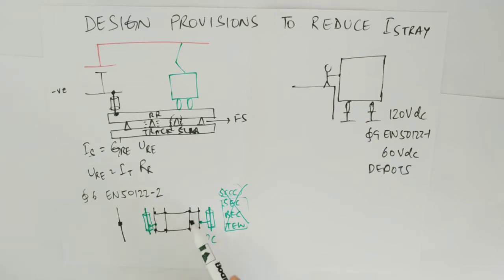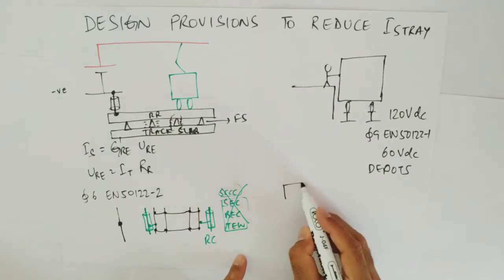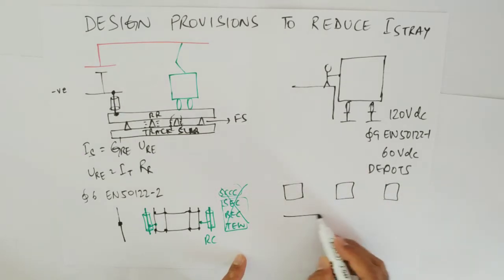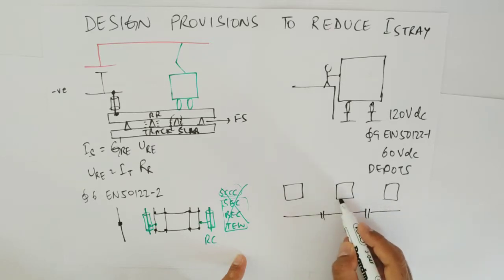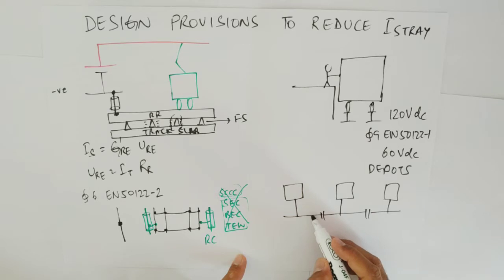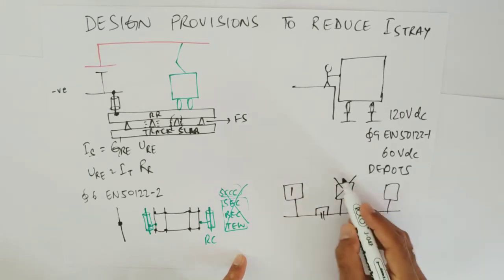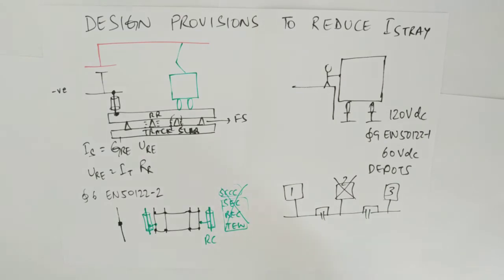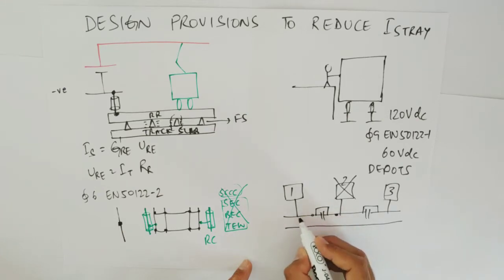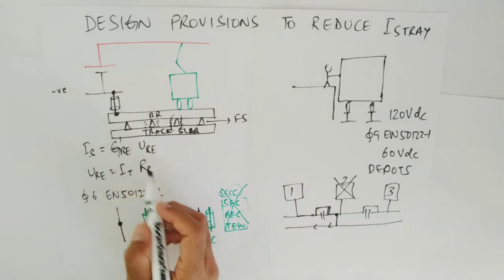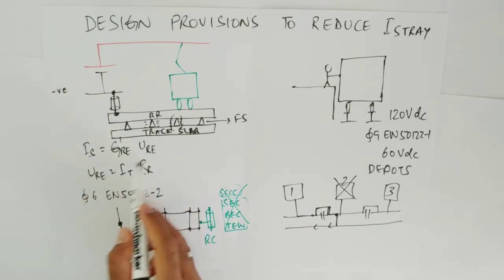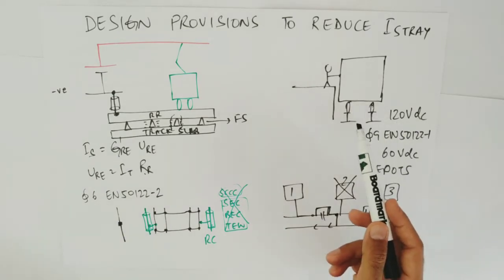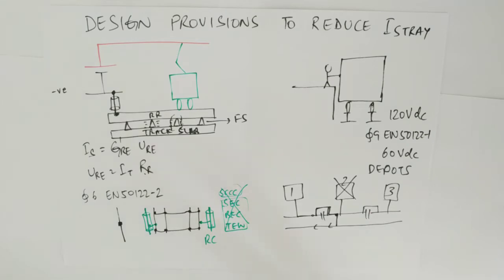In the N-1 case, suppose there are three traction substations feeding separate sections. If one substation fails, the adjacent ones extend their supply. The running rails over a longer section carry the traction current, increasing the rail length and therefore the resistance. Once resistance increases, the rail potential increases, and if it goes above 120 volts DC the person can get an electric shock.